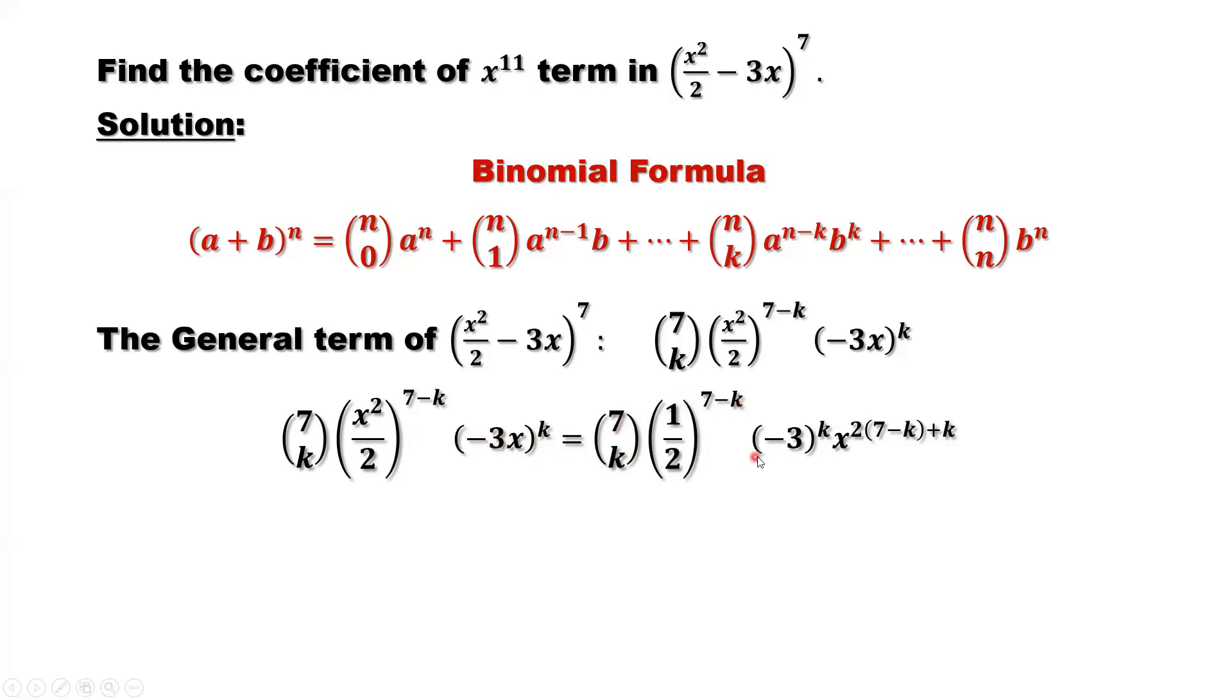Then count x. x to the power 2 times (7 minus k), because that's x squared then 7 minus k. So that's x^(2(7-k)). In this part we have x^k. In the power position, we need to add k again for the last x to the power k.